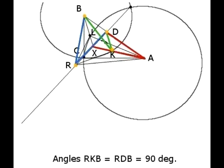Because the angle RDB as we know it is 90 degrees, which allows us to conclude that the angle RKB is indeed also 90 degrees, and the line RK is tangent to the circle with center B.